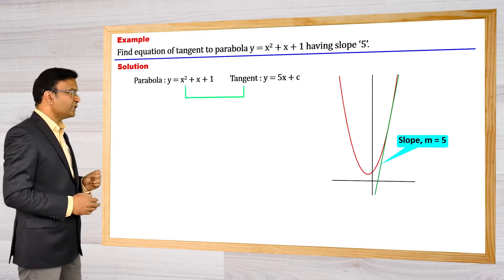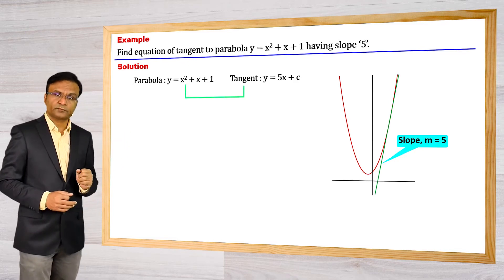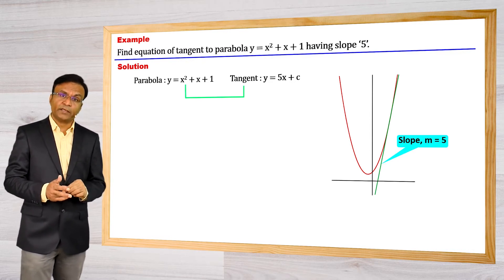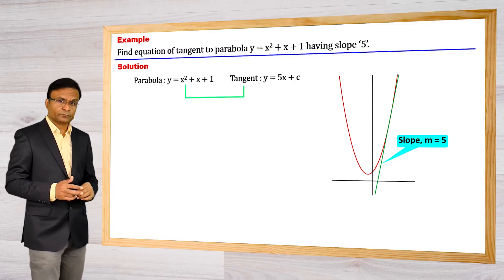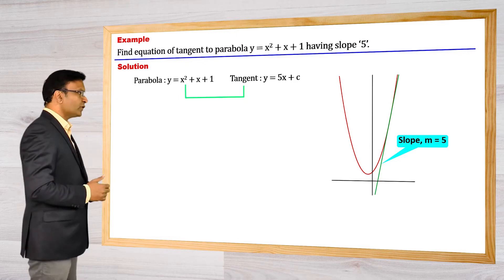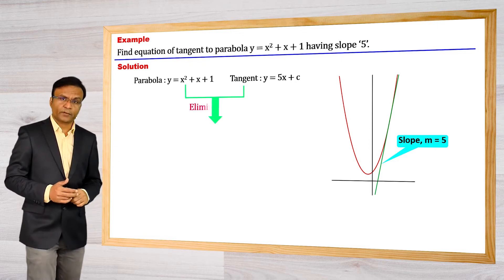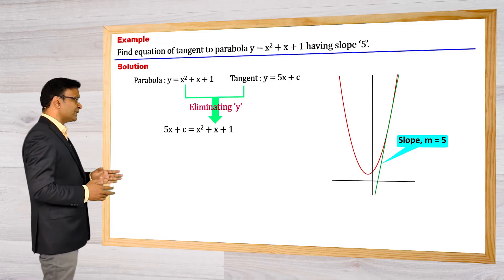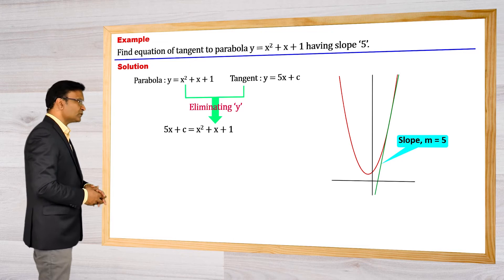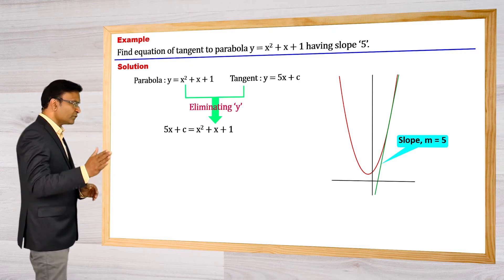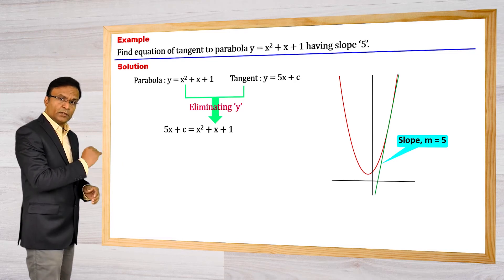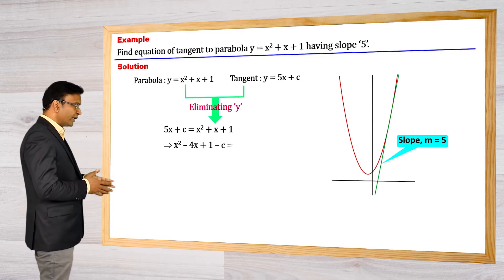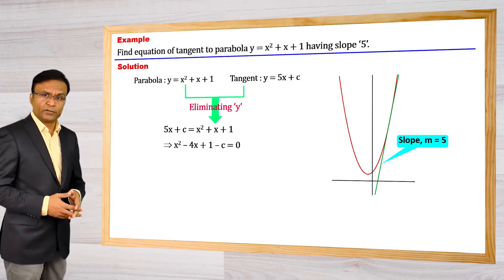This line is touching the parabola, so first of all we solve the equation of line and equation of parabola. For that, let us eliminate y. We get the equation 5x plus c is equal to x square plus x plus 1. Taking all the terms on one side, we get the equation x square minus 4x plus 1 minus c is equal to 0.